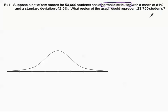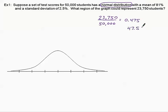The mean and standard deviation are not really needed for this part. What we're looking for is a certain percentage: what part of the 50,000 is 23,750? I'll take 23,750 divided by 50,000, and when I do that division I get 0.475, which converted to a percentage is 47.5%. So we're looking to see where in the normal curve represents 47.5%.